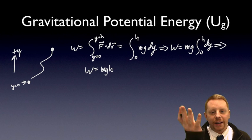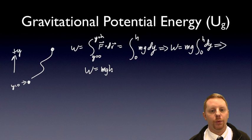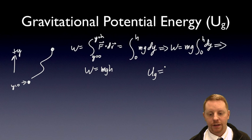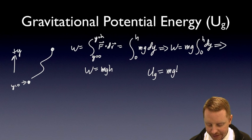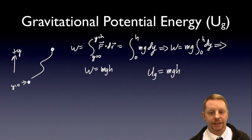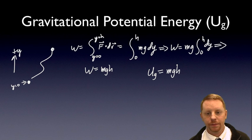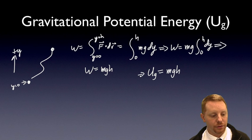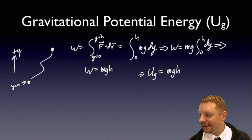The work we did on that object raising it to a new height has to go somewhere — it became the object's potential energy, U sub g. So the potential energy of an object in a constant gravitational field is mgh, where h is a relative height distance, a relative change in delta y. As long as you set your potential energy function to zero at that base level, you have a nice simple function for the potential energy due to gravity.